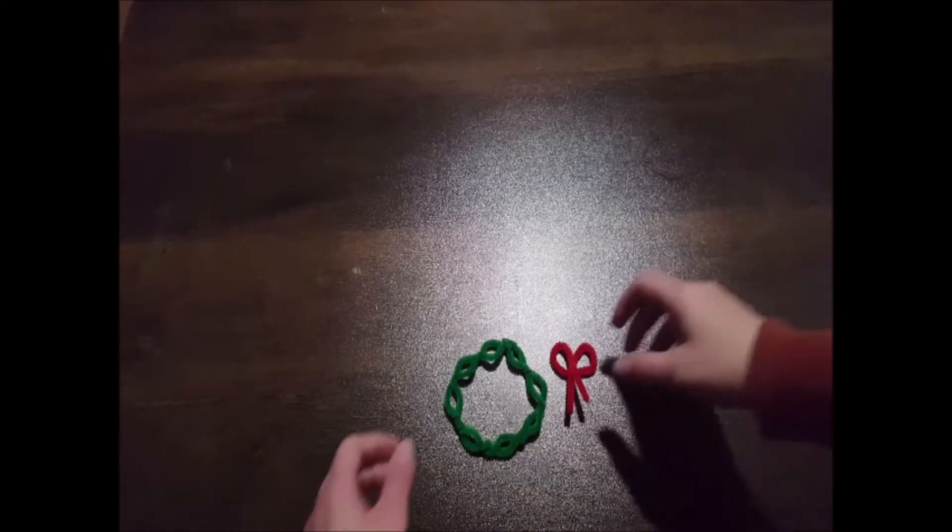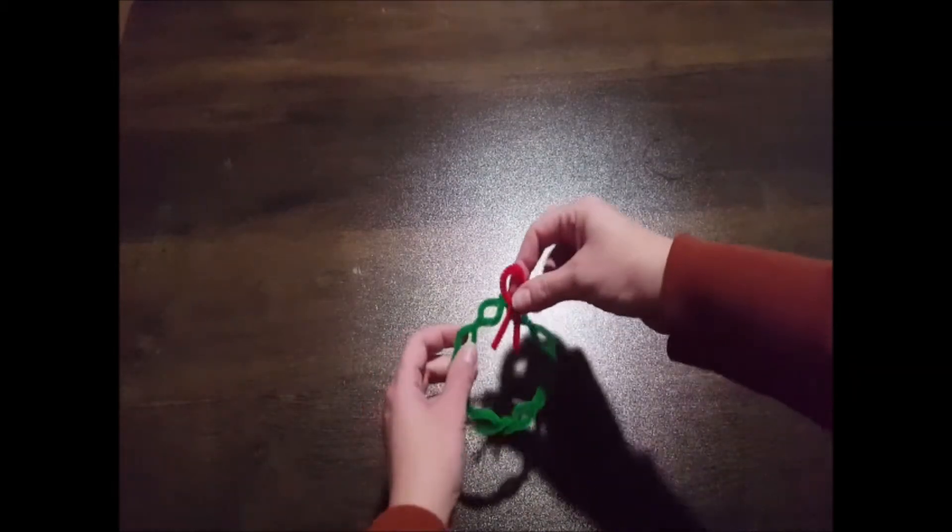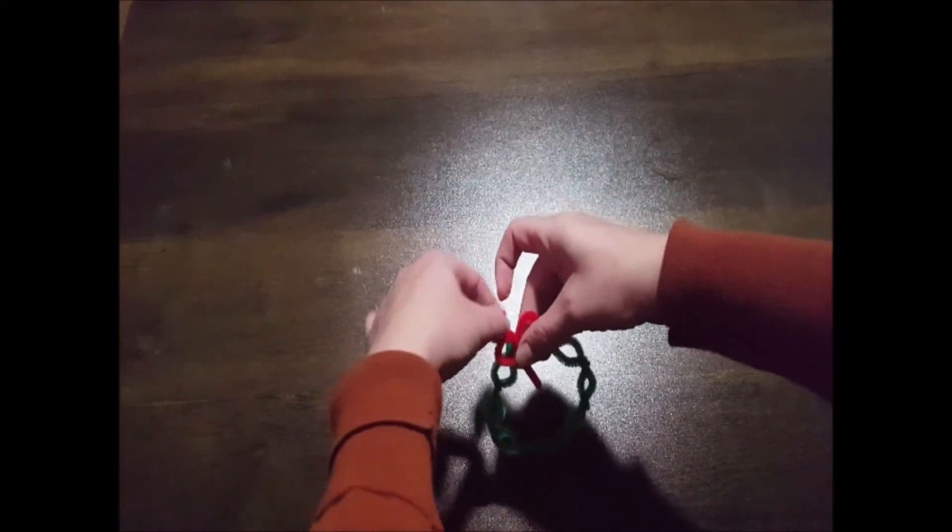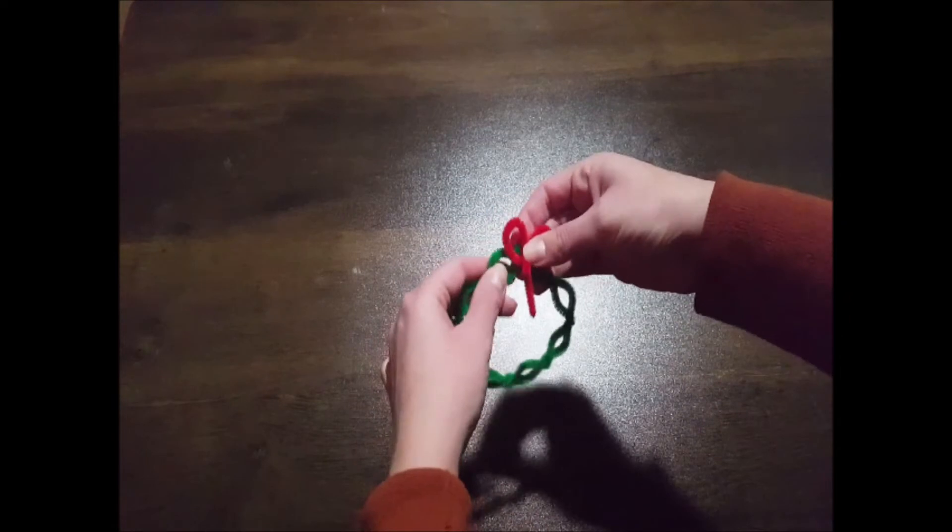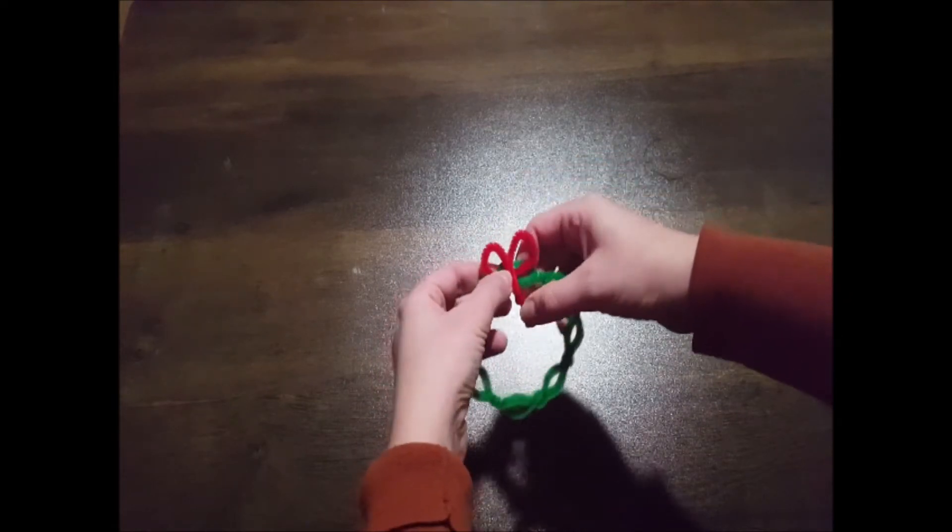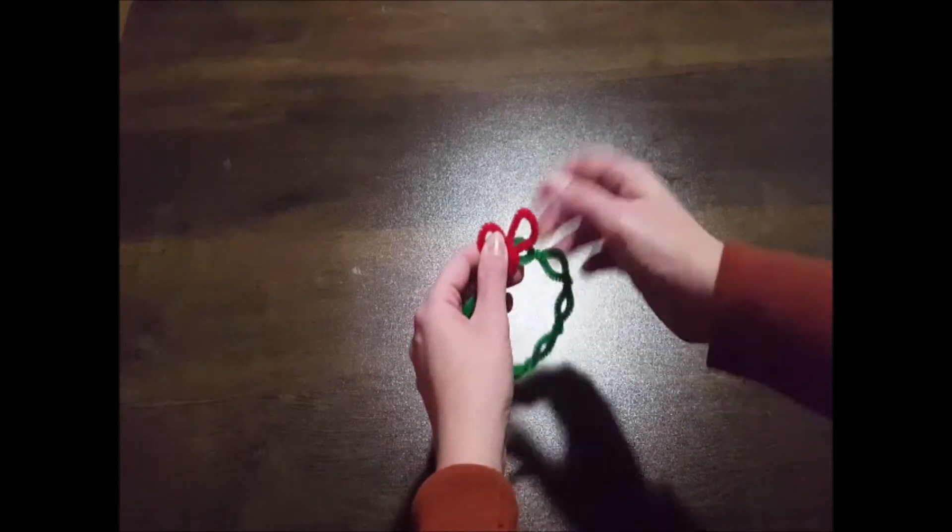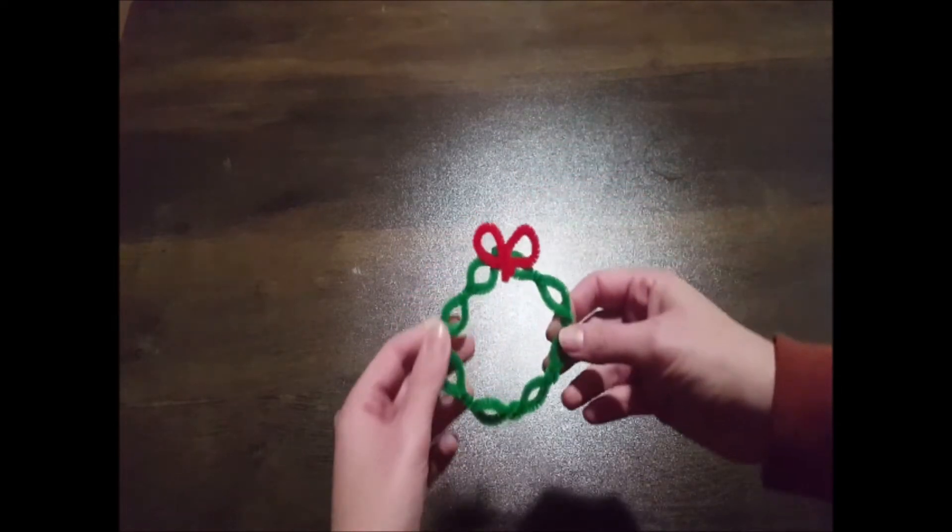The final step is just to put the bow and wreath together. I simply place the bow where I want the top of the wreath to be. And I wrap the ends all the way around both wreath and bow loops. This way it will hold together nicely. And now I have a completed holiday wreath.